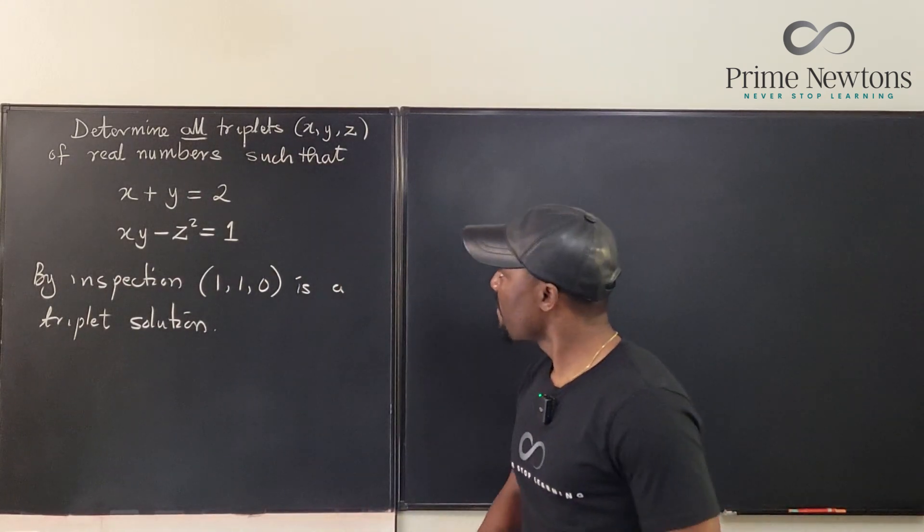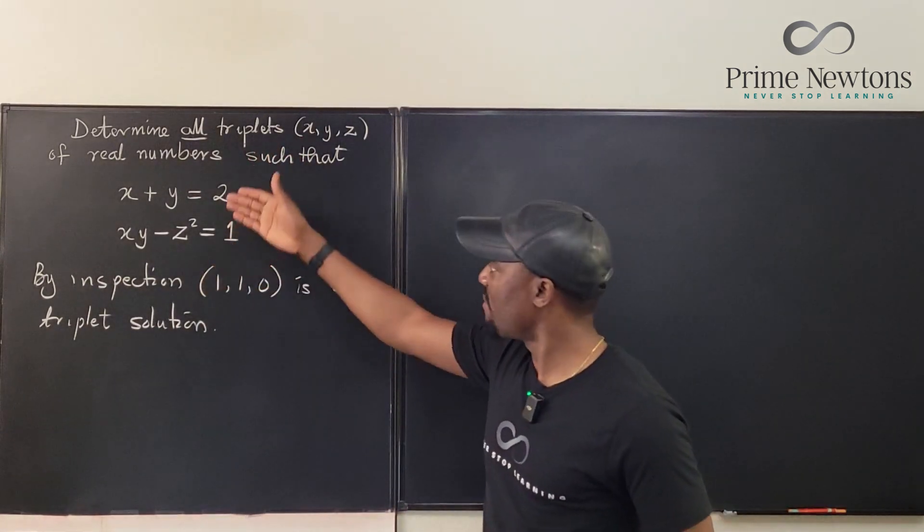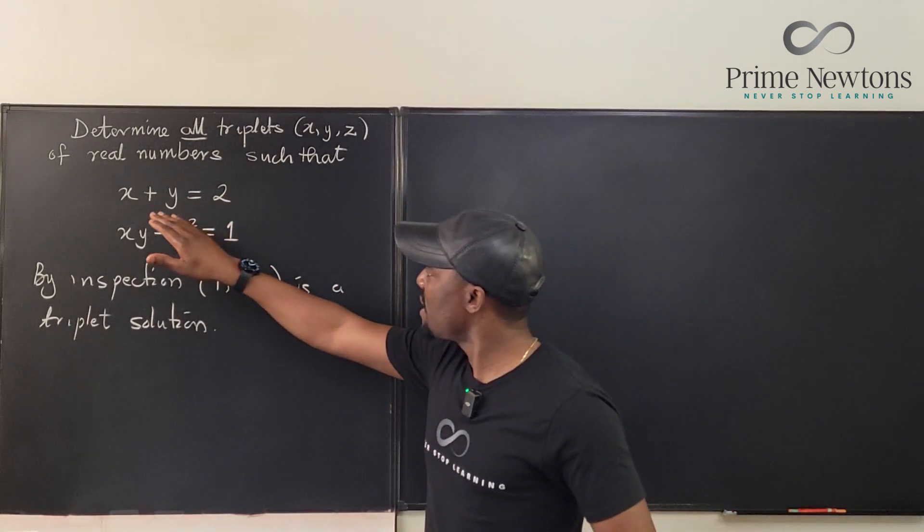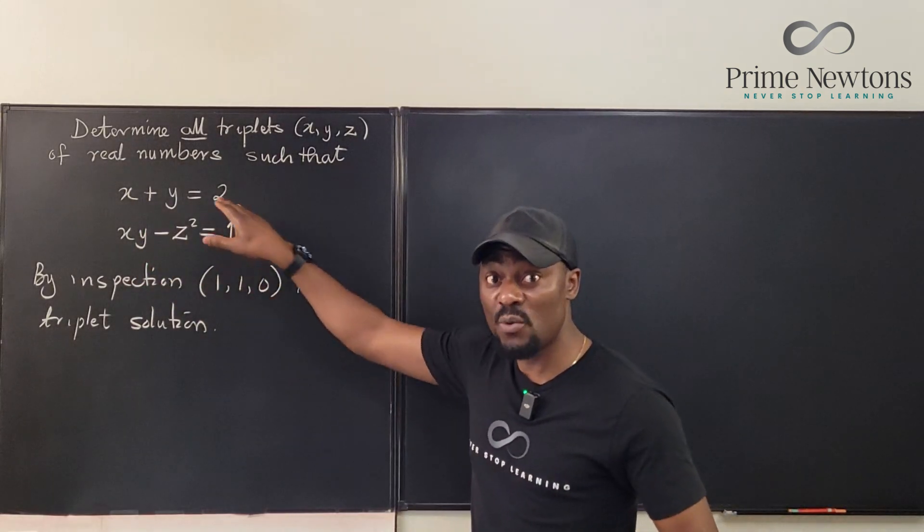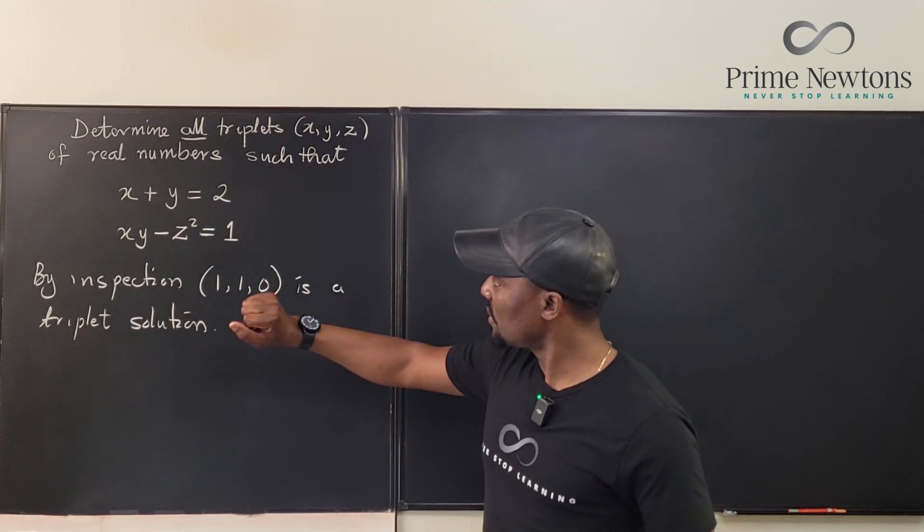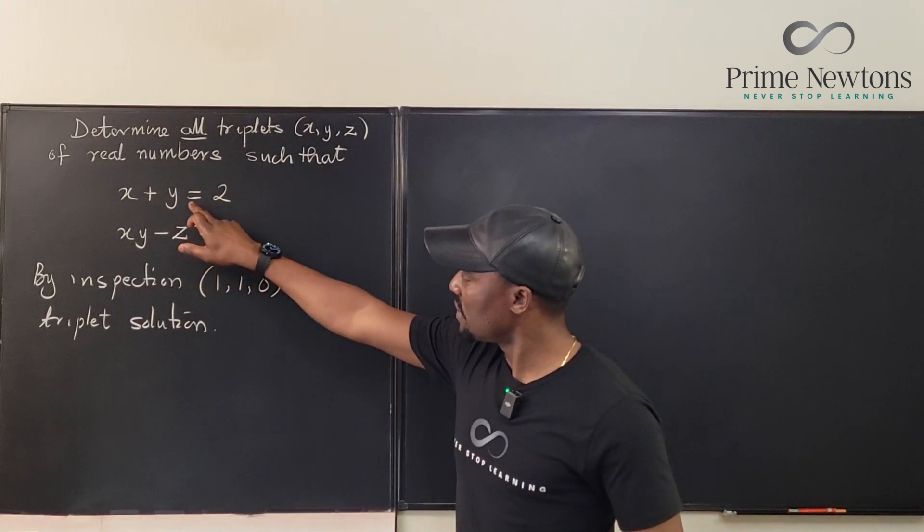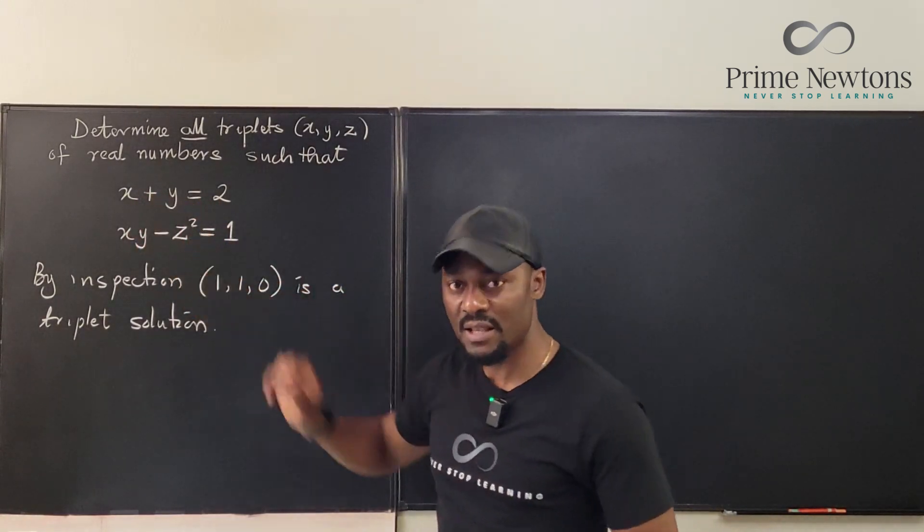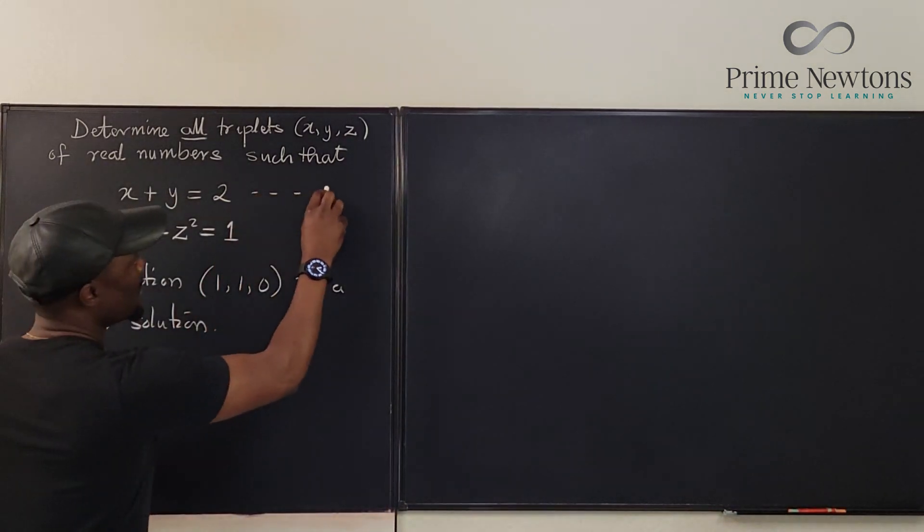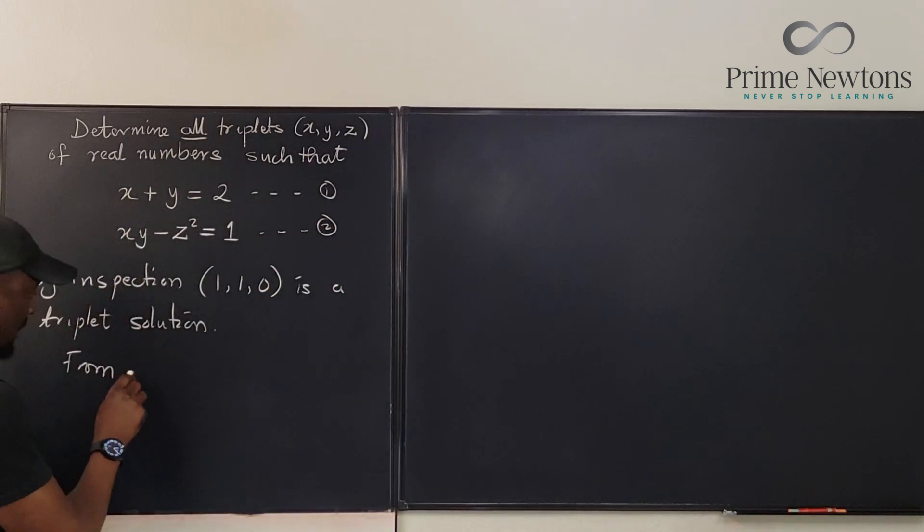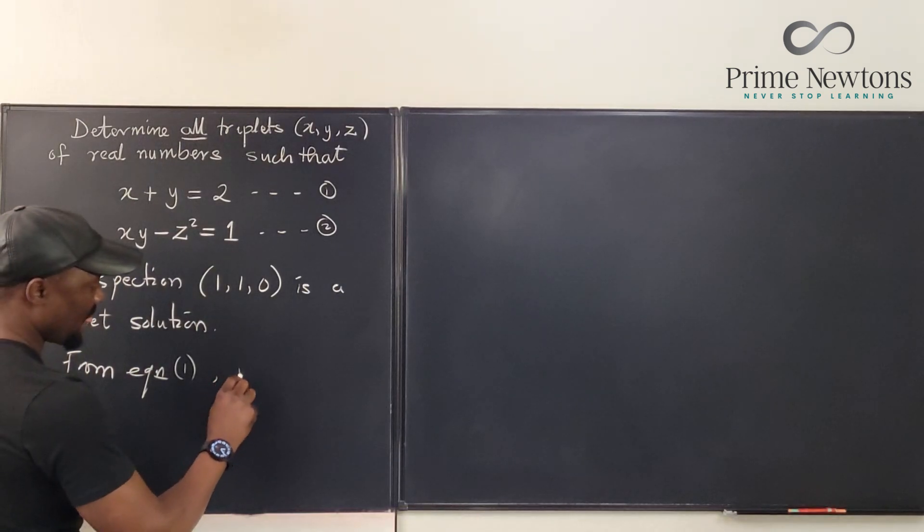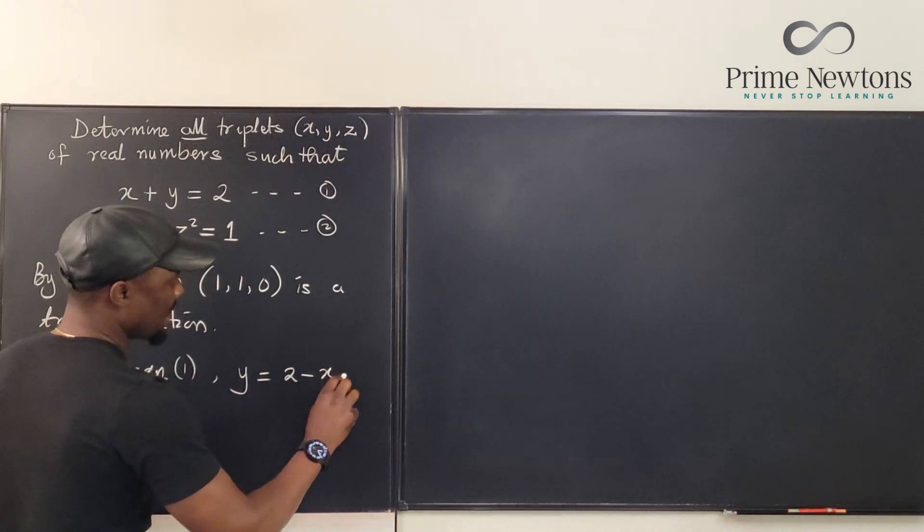Whenever you have a problem like this, you have a system of equations, there's always this idea of how can we merge the two, or how can we make one work for the other. Based on what I see, I can isolate y from the first equation, so that y equals 2 minus x. From equation 1, we can tell that y will be equal to 2 minus x.